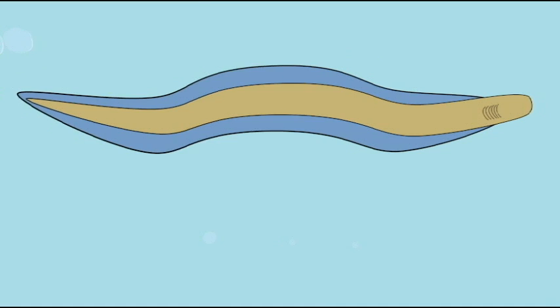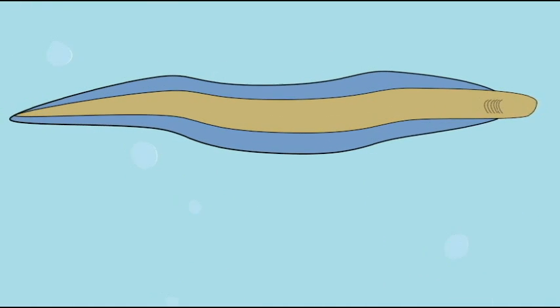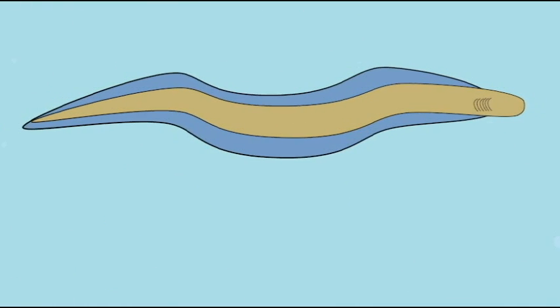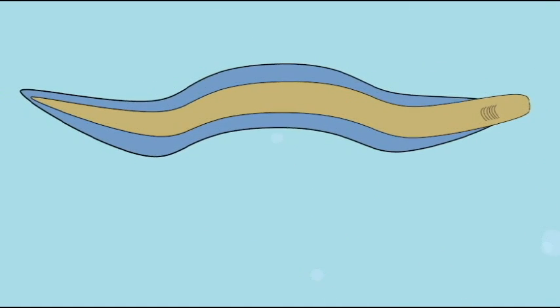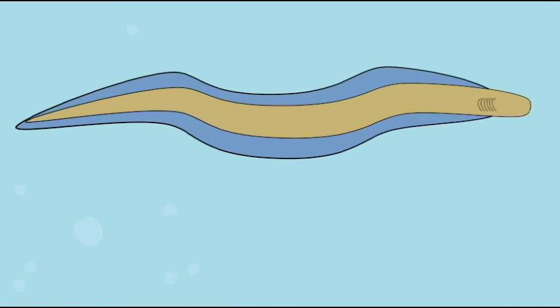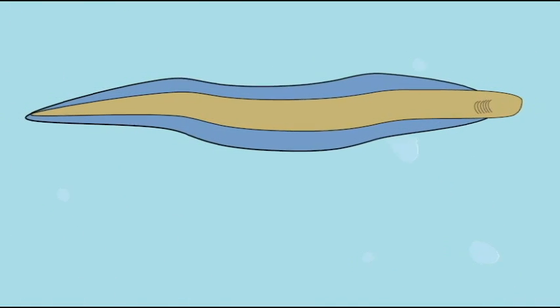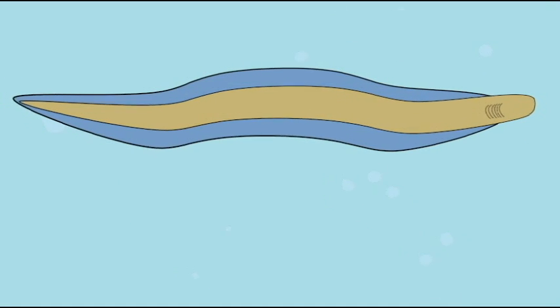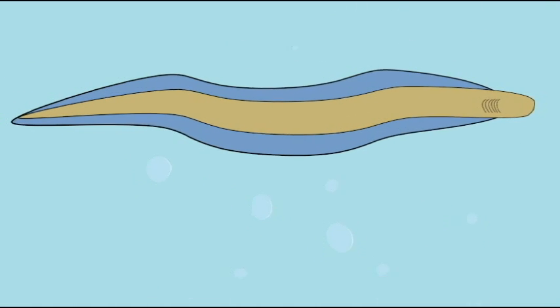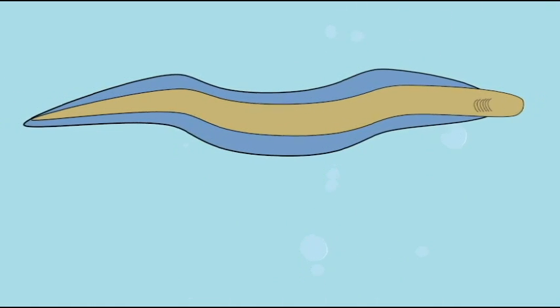As these chordates became more fish-like, they evolved a number of additional features, such as a corpus luteum in the reproductive system, junctions between epidermal cells, cartilage-like tissues, four segments of the brain, so the brain of these tiny chordates and of the more advanced vertebrates can be divided into the same four major regions.